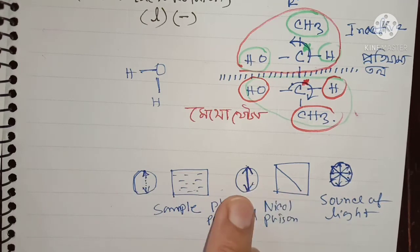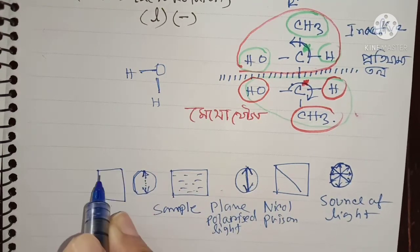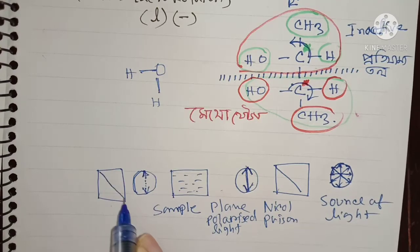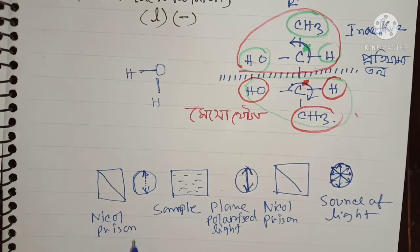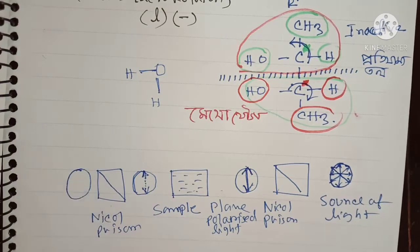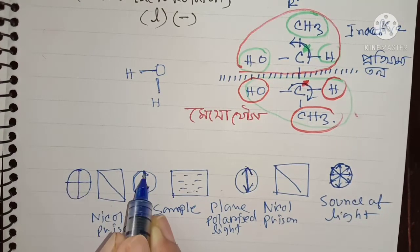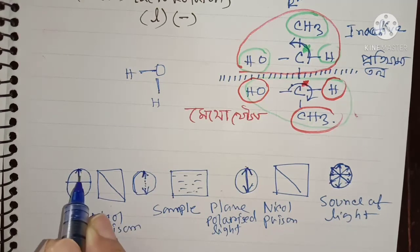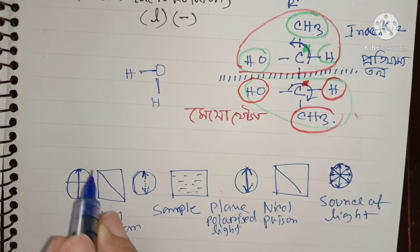This is the Nicole prism. The Nicole prism is used to produce plane polarized light in this optical activity experiment setup.